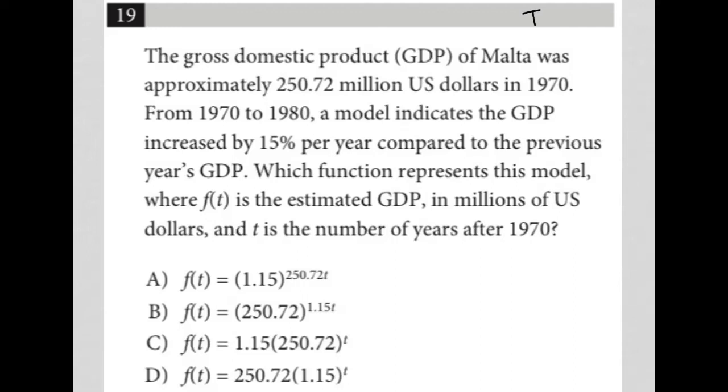This question is a translate word problem question. So I'm going to start reading the question and make sure I write down any quantitative information. The question says the gross domestic product GDP of Malta was approximately 250.72 million U.S. dollars in 1970. So let's write that down.